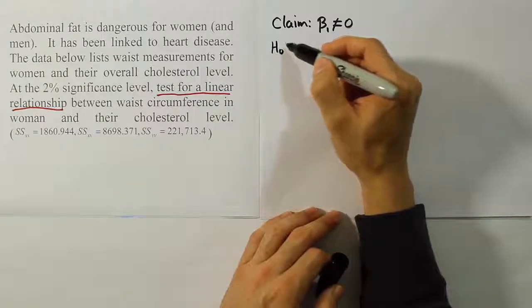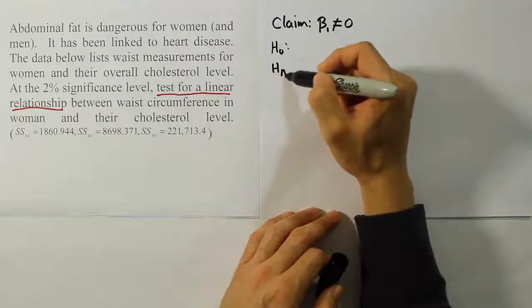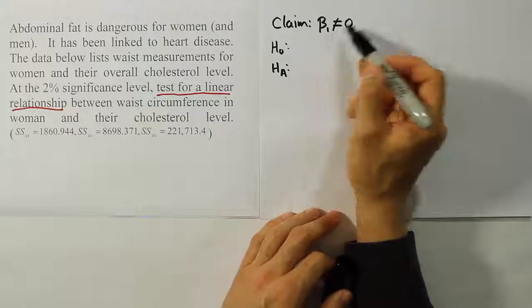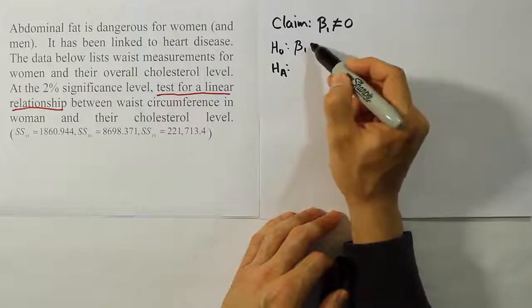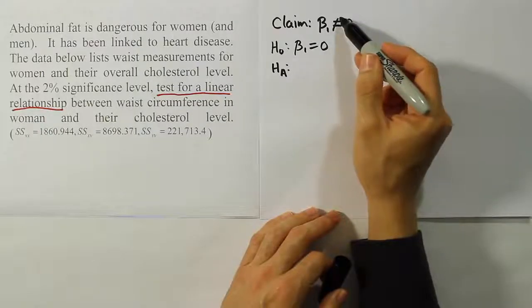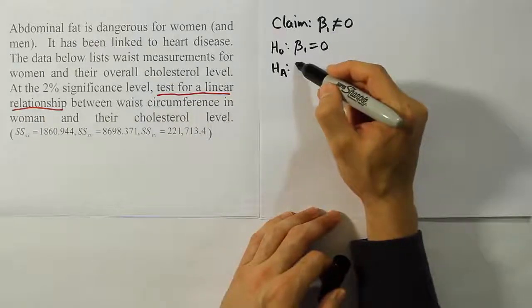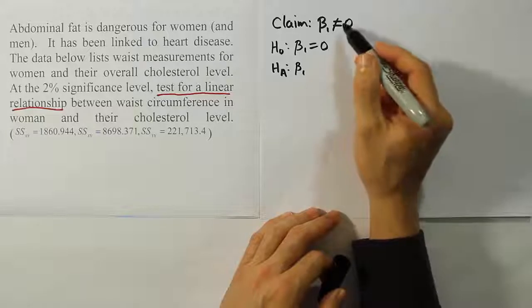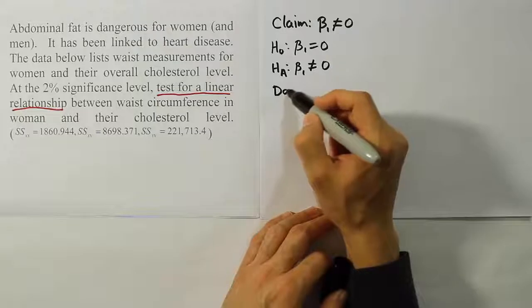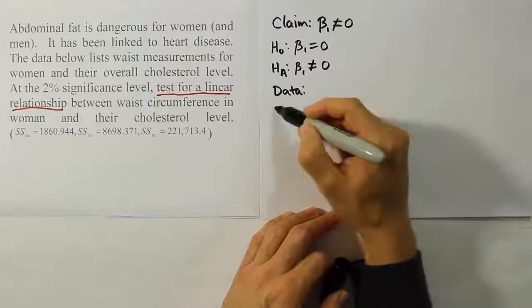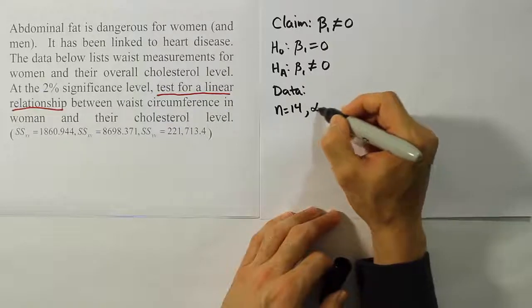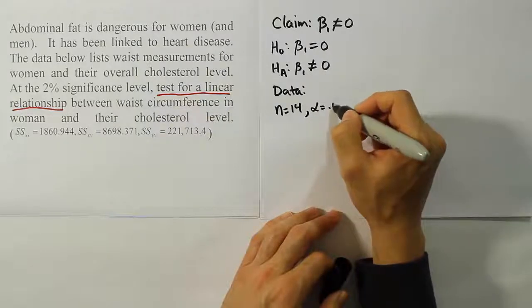Now we're going to do H0 and HA. For H0, we're going to express the opposite idea that beta 1 is equal to 0. We can tell that not equal to is part of HA's claim set. So that means that the claim in HA must be beta 1 not equal to 0. From there we're going to work on the data step for the problem. Our n for the problem was 14. And the problem tells us that alpha here is 2%, so 0.02.